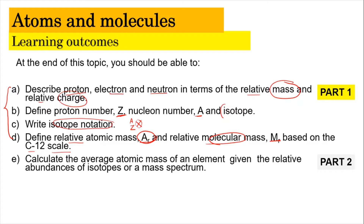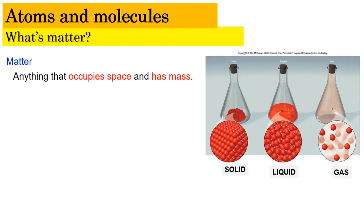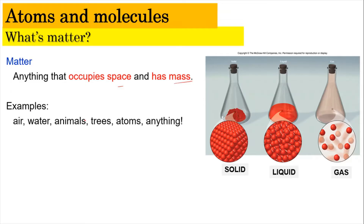Without any further ado, let us start part 1. Matter is basically anything that has mass and occupies space — it can be the air that we breathe, the water that we drink, the animals that we pet, or even the trees that surround us. Matter can exist in 3 states: solid, liquid, and gas.